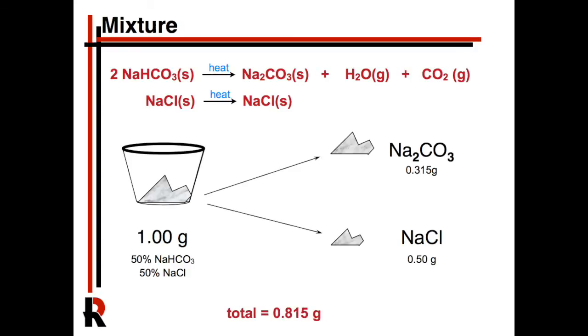So then if you just look at how much is left in the pan, you'll see that the total is actually 0.815, so it's composed of the sodium chloride mixture as well as the sodium carbonate mixture. So this is conceptually pretty easy to see here, but it gets more complicated.